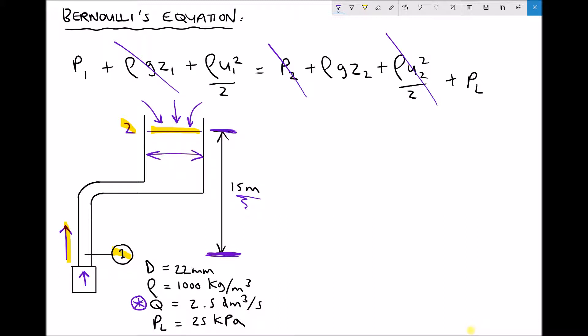You can then rewrite the Bernoulli's equation. In this equation we have P1 plus rho u1 squared over 2 equals rho gz2 plus any pressure losses. So we've simplified the Bernoulli's equation down to just 4 terms.